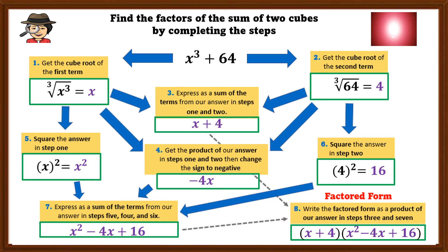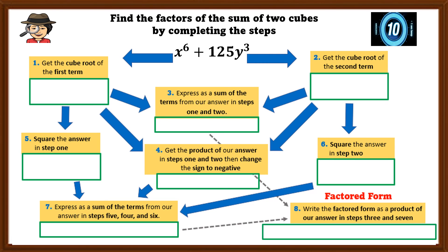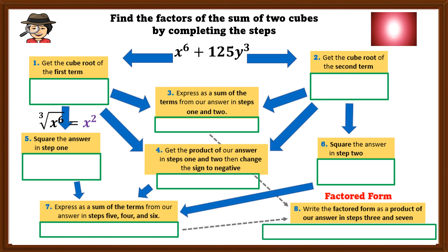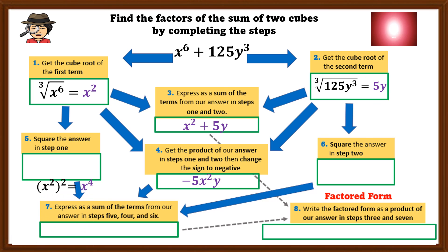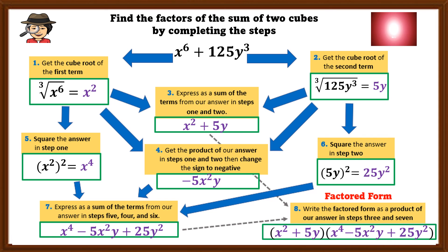Another problem: x⁶ + 125y³. You have 10 seconds — ready, go! Time's up. Step 1: x². Step 2: 5y. Step 3: x² + 5y. Step 4: −5x²y. Step 5: x⁴. Step 6: 25y². Step 7: x⁴ − 5x²y + 25y². Factored form: (x² + 5y)(x⁴ − 5x²y + 25y²). I am happy that you learned how to find the factors of the sum of two cubes. Till next time!